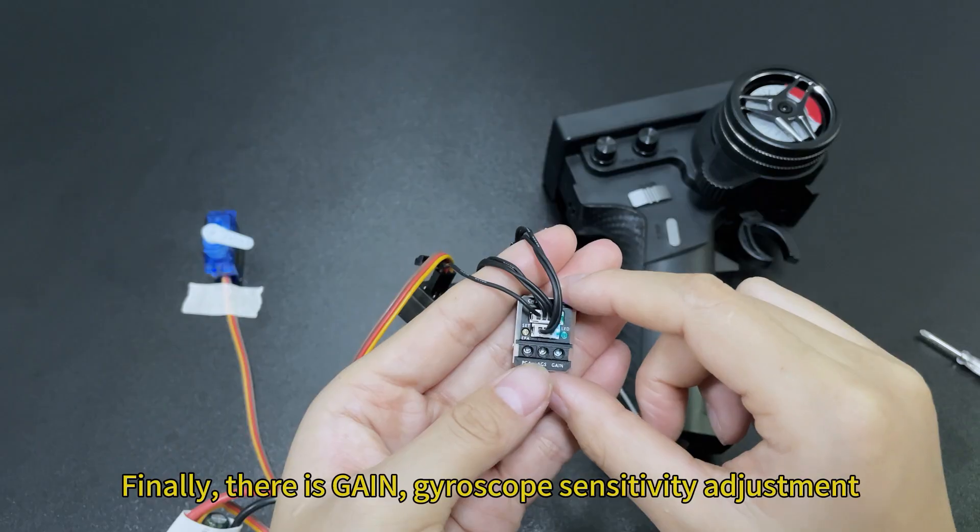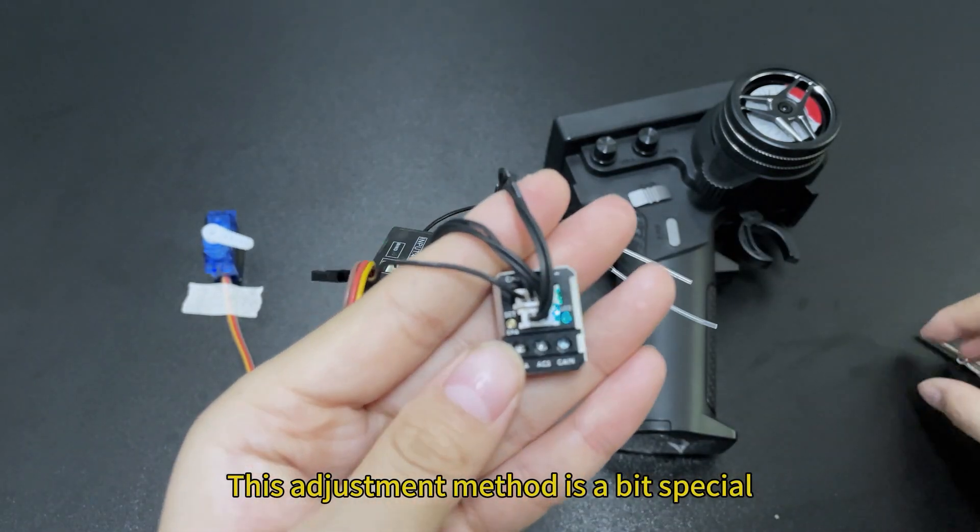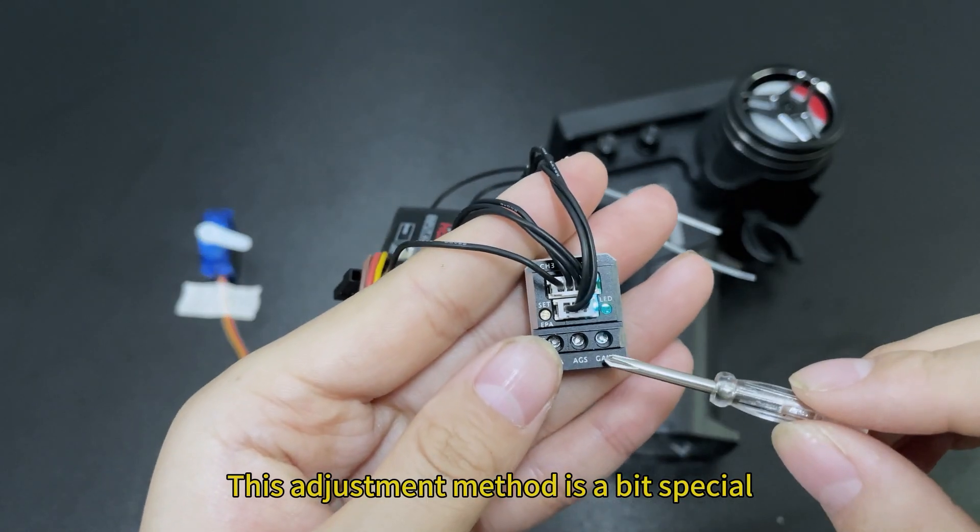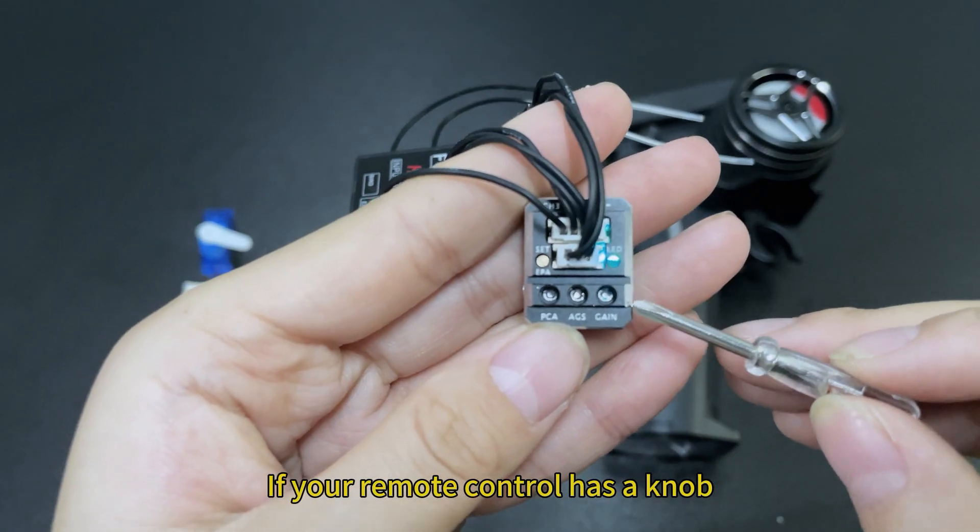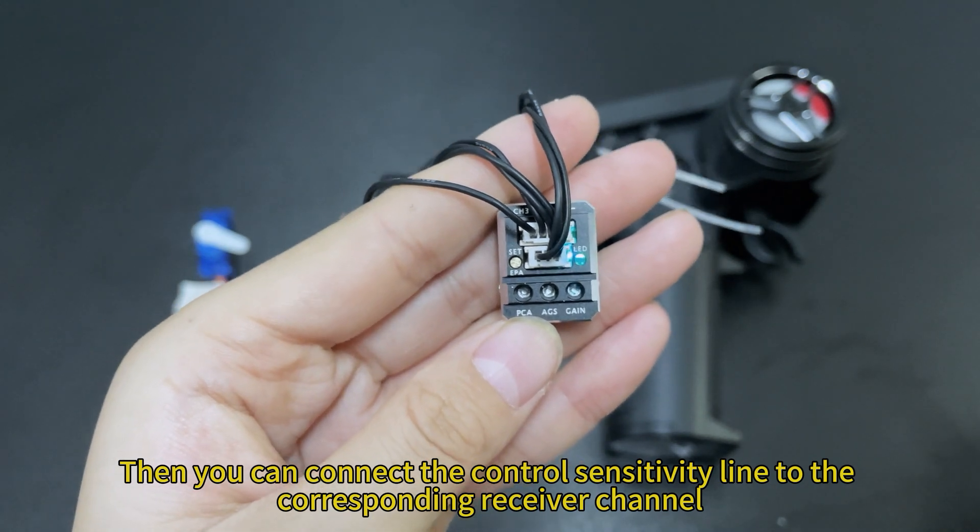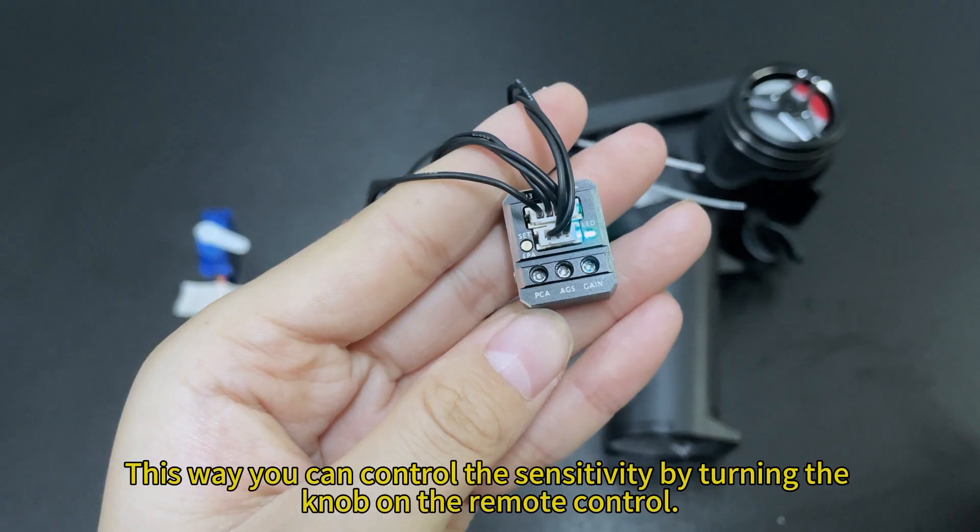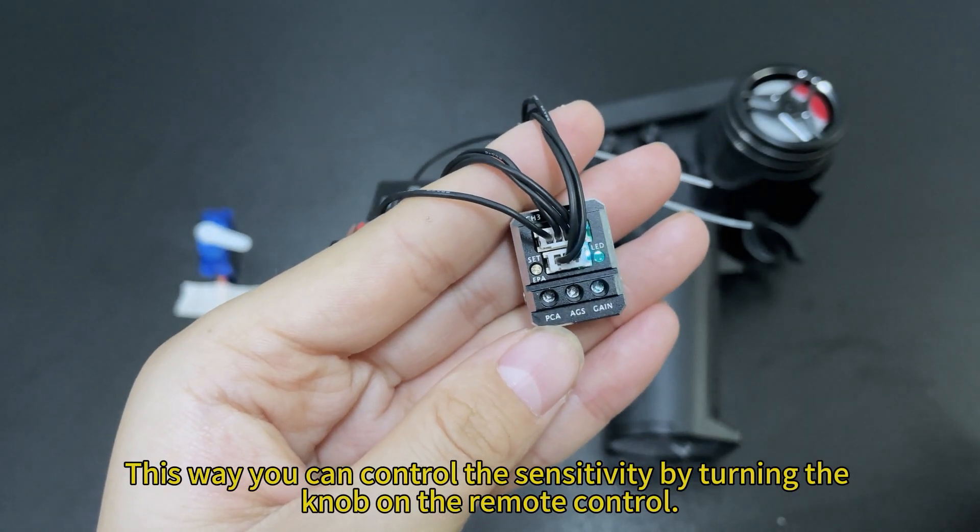Finally, there is Gain Gyroscope Sensitivity Adjustment. This adjustment method is a bit special. If your remote control has a knob, then you can connect the control sensitivity line to the corresponding receiver channel. This way you can control the sensitivity by turning the knob on the remote control.